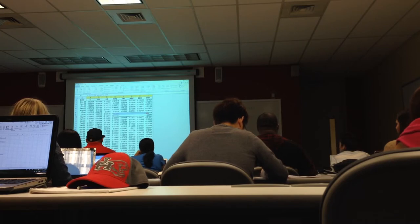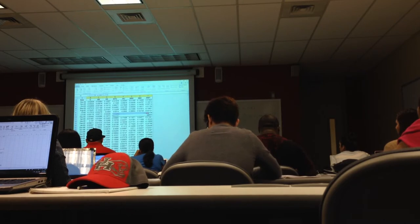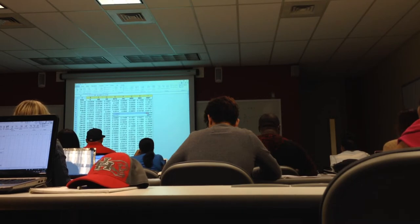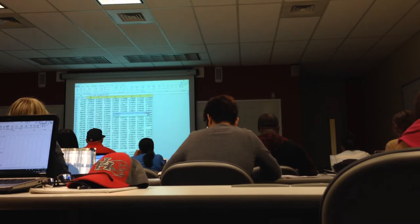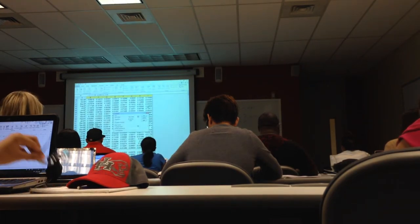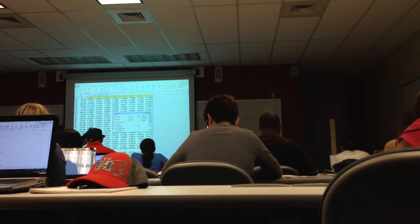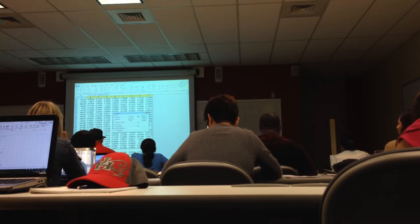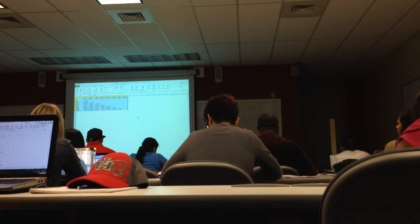You go and select the whole data set going forward and down, selecting up to the end of the data. You select 'Labels in first row' because I had names of the companies in the first row. We let it pop up in a new worksheet and it gives you the full correlation matrix.